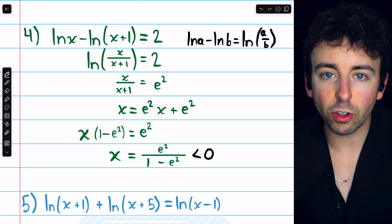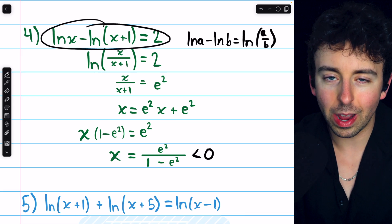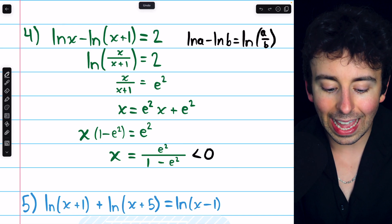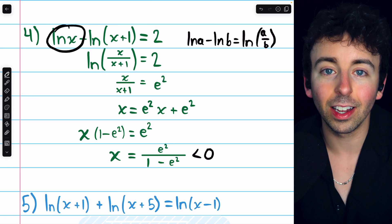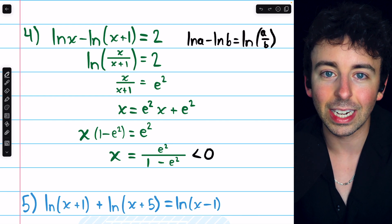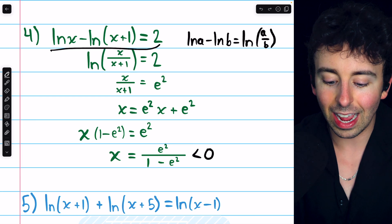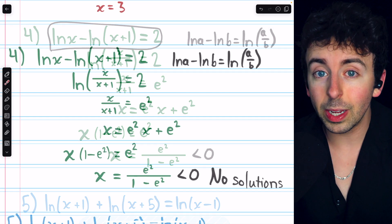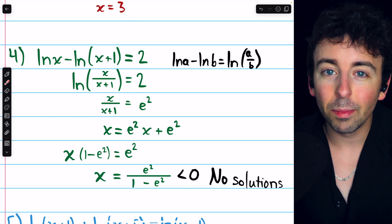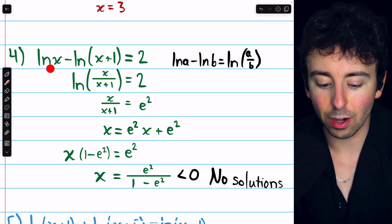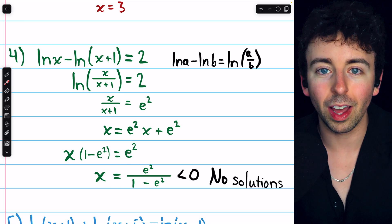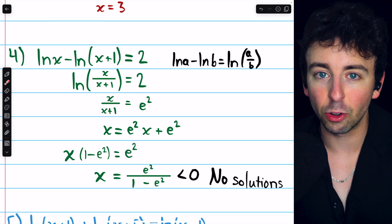but that's not the original equation. This is the original equation, and x doesn't make sense for this equation because we can't take the natural log of a negative. x plus one, it turns out, is also negative. And again, we can't take the natural log of a negative. So this equation actually has no solutions. So again, by assuming the equation does have a solution, you can find one, but you got to make sure you check it in the original expressions because sometimes, like in this case, the solution we find is extraneous. It doesn't actually work.